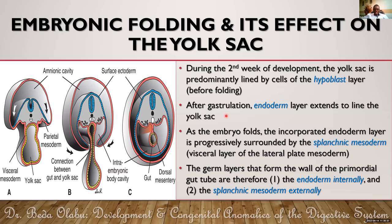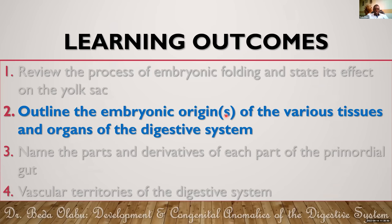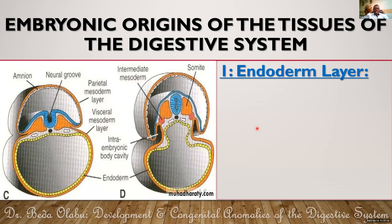We've addressed the first agenda — the process of embryonic folding and its effects on the yolk sac. We can now talk about the germ layers that give rise to the various tissues of the digestive system. The endoderm inside contributes to the formation of the alimentary canal. In the third week that endoderm layer, going to the fourth week after complete folding, becomes the innermost layer of the gut tube.